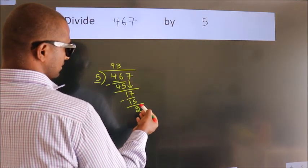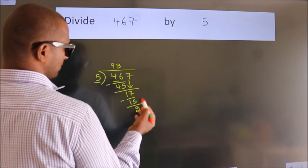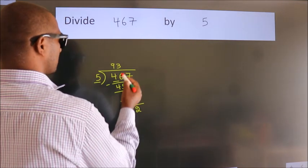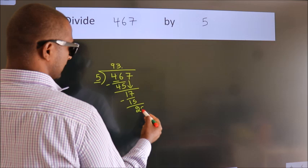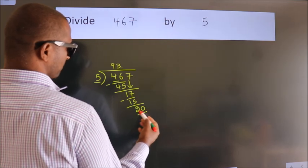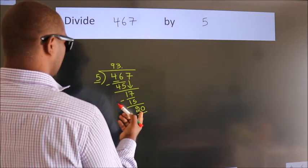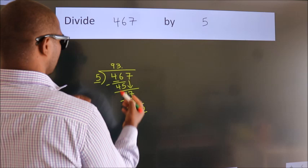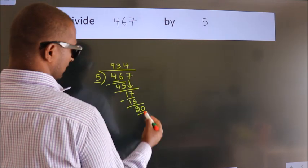After this, no more numbers to bring down. So what we do is we put a dot and take 0. So 20. When do we get 20 in the 5 table? 5 fours, 20.